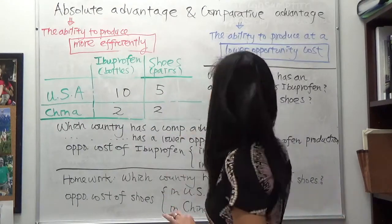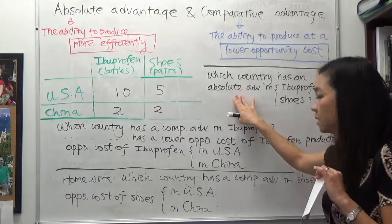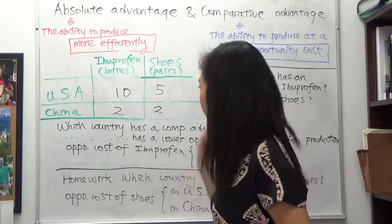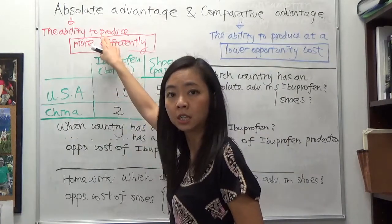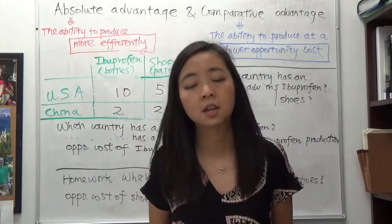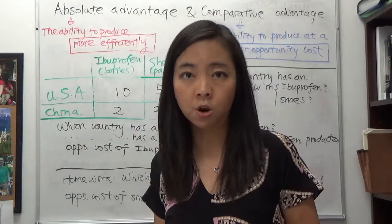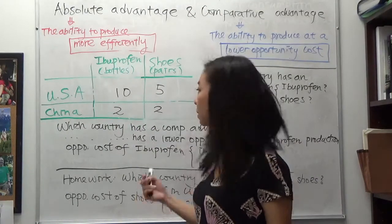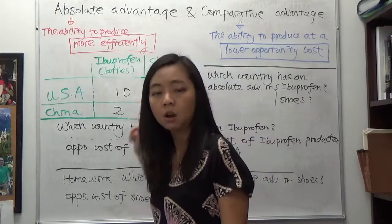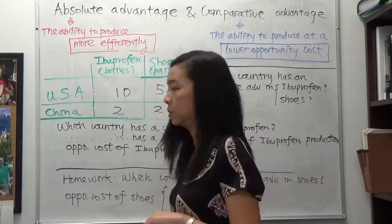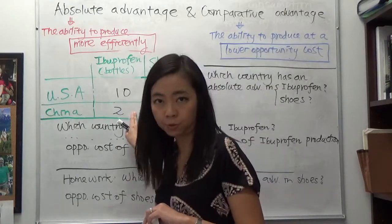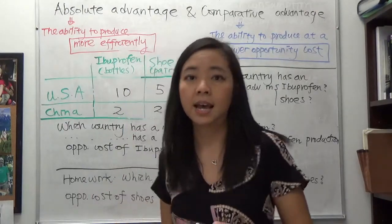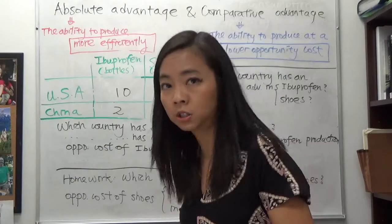The first question is: which country has an absolute advantage in the production of ibuprofen? We look at which country can produce ibuprofen more efficiently. In one labor hour, the US can produce 10 bottles of ibuprofen, whereas China can only produce two bottles. Since 10 is greater than two, the US has an absolute advantage in the production of ibuprofen.